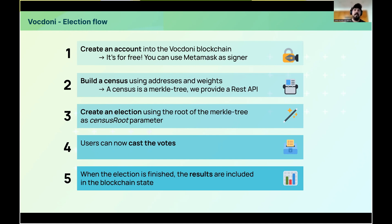These parameters allow you to define how the election will behave — like the start and end date, whether results are encrypted until the end or visible in real time, and whether the census is closed or dynamic, meaning more people can be added during the election period. Once the election starts, users can cast votes in a gasless way. When the election is finished, the results can be retrieved and are included in the blockchain, so anyone can verify them since the blockchain is public.